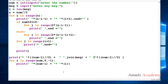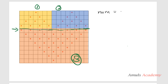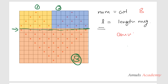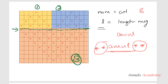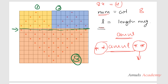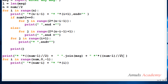Here I use num minus l divided by 2 because num is the total number of columns input by the user and l is the length of the message. For example, if num is 8 and the message is 'amul' with length 4, then 8 minus 4 equals 4, divided by 2 gives 2 — so we print 2 stars before and 2 stars after the message, totaling 8. We use truncated division to get an integer output.